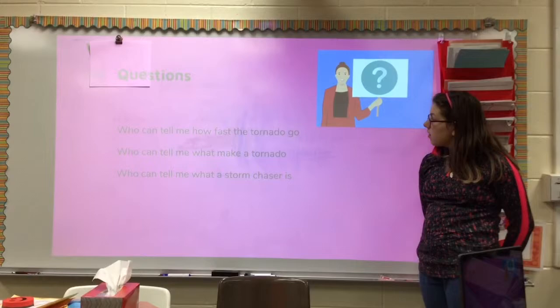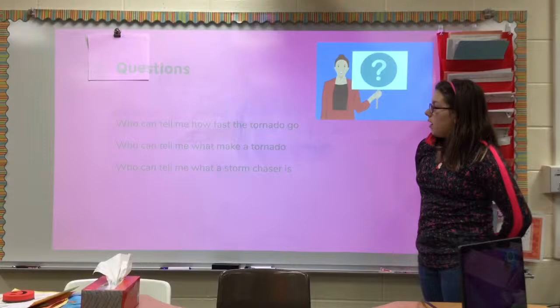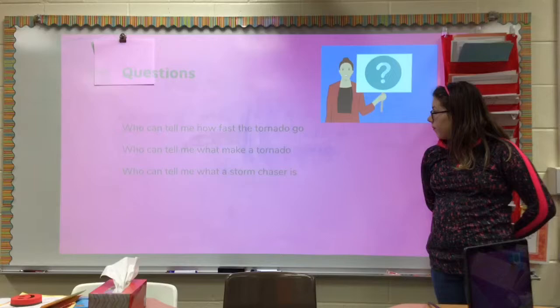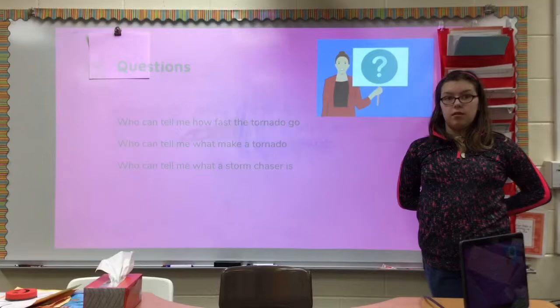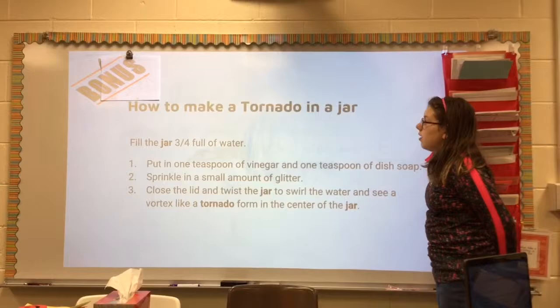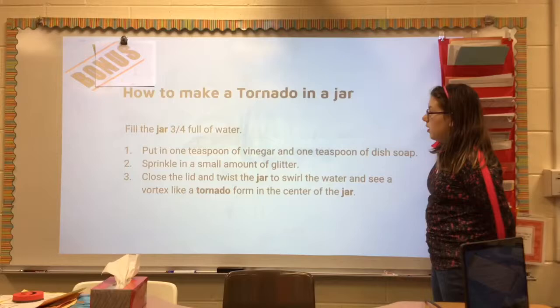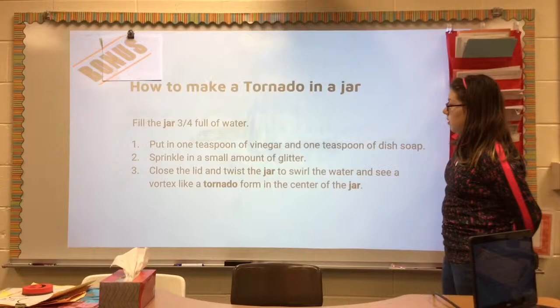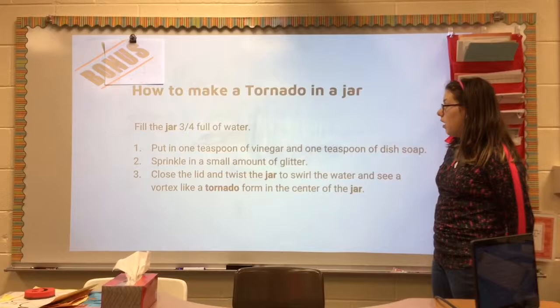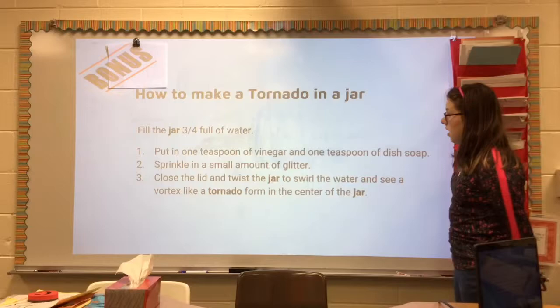Who can tell me how fast a tornado goes? Who can tell me what makes a tornado? Who can tell me what a storm chaser is? To make a tornado in a jar: fill the jar three-fourths full of water. Put in one teaspoon of vinegar and one teaspoon of dish soap. Sprinkle a small amount of glitter. Close the lid, twist and twirl the jar, and watch a vortex like a tornado form in the center of the jar.